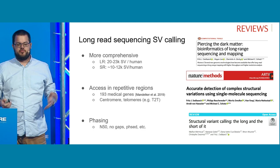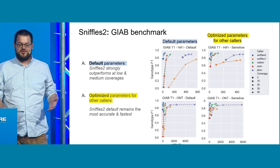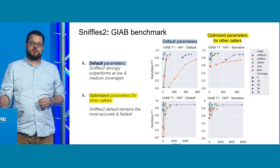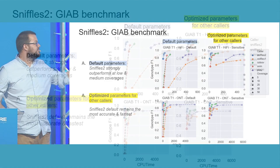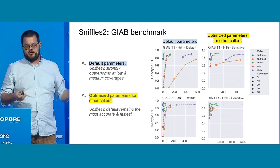With all these advancements, it became obvious that we had to develop a new structural variant caller besides Sniffles 1 that could keep pace with the amount of data being produced. So we developed Sniffles 2. Here I'm showing you the genome-in-a-bottle benchmark across the whole genome. On the left side you see default parameters for different programs and on the right side the optimized parameters. Independent of the technology — higher or lower in nanopore — we can show that Sniffles 2 is more accurate and faster than others, due to a completely new implementation including automatic parameter optimization. We can identify structural variants down to 5x or 6x coverage genome-wide, really enabling scaling.